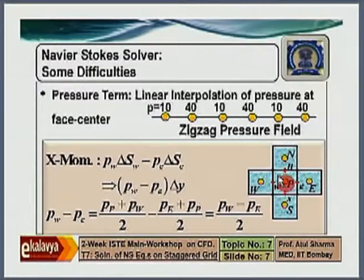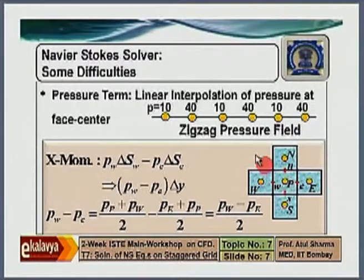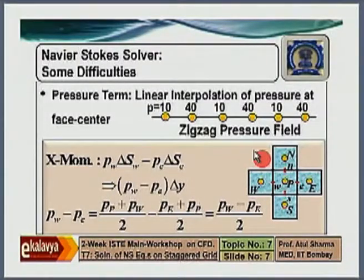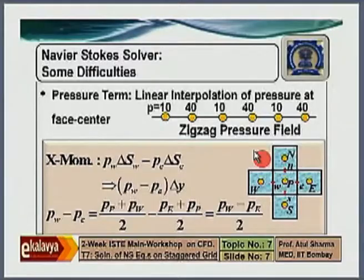This pressure-velocity decoupling can result in a flow field with a zigzag pressure distribution and wavy velocity distribution, which technically obeys mass conservation and momentum conservation, but clearly cannot represent a real flow field.